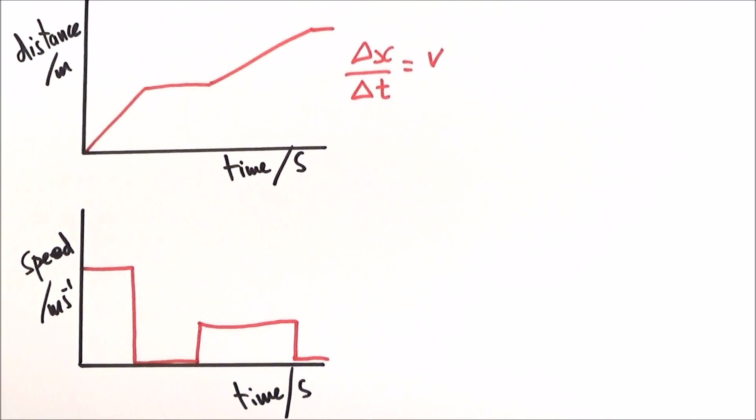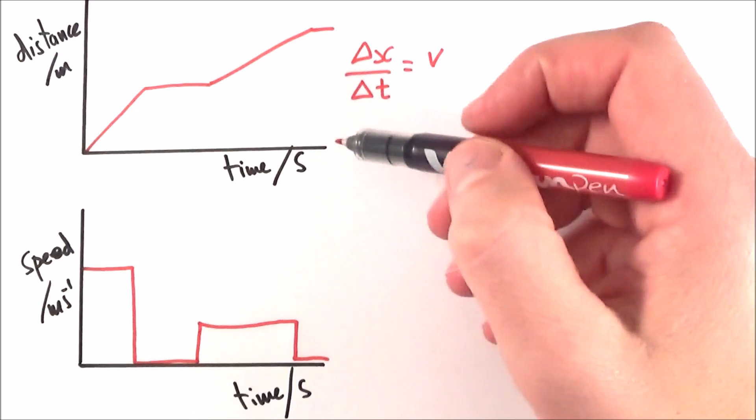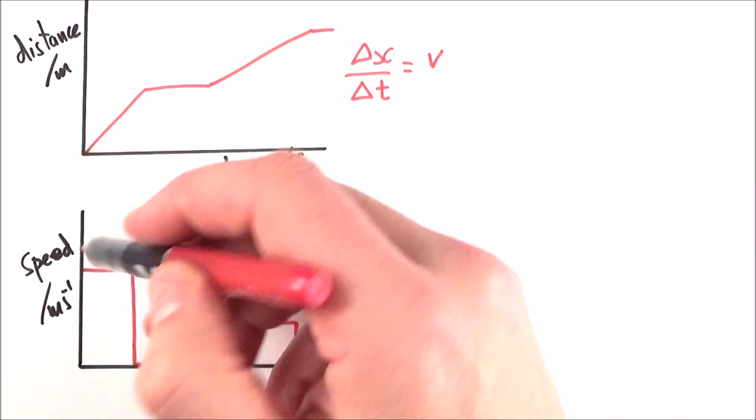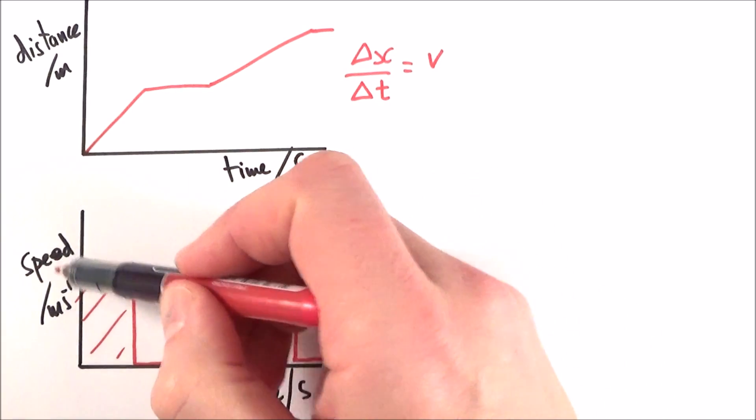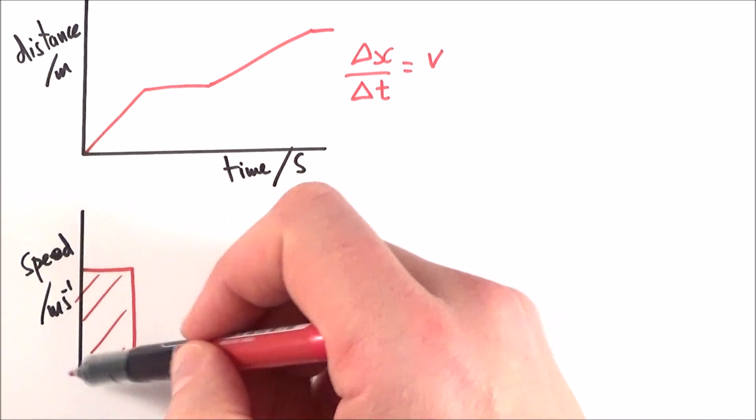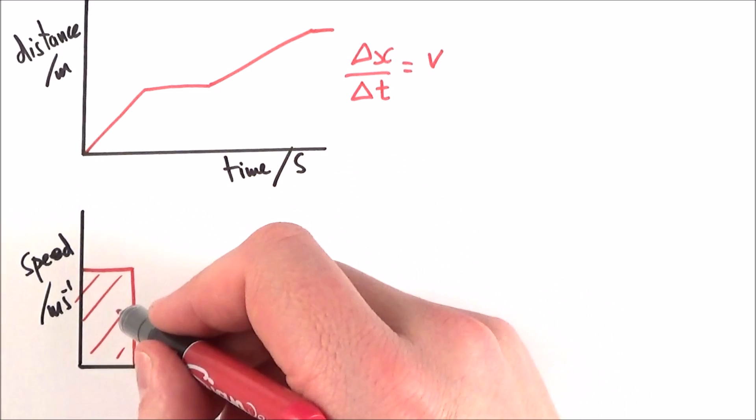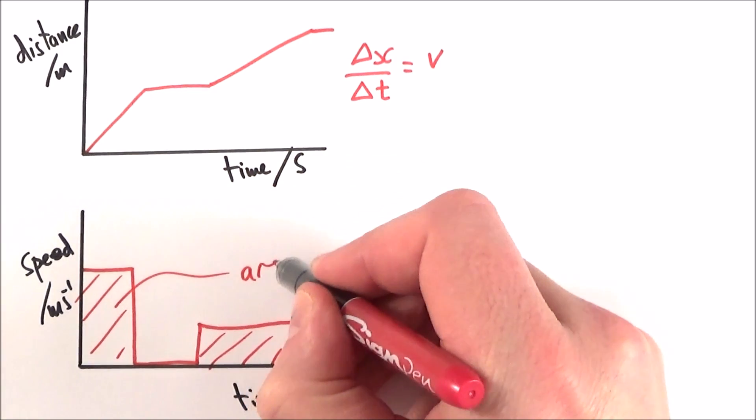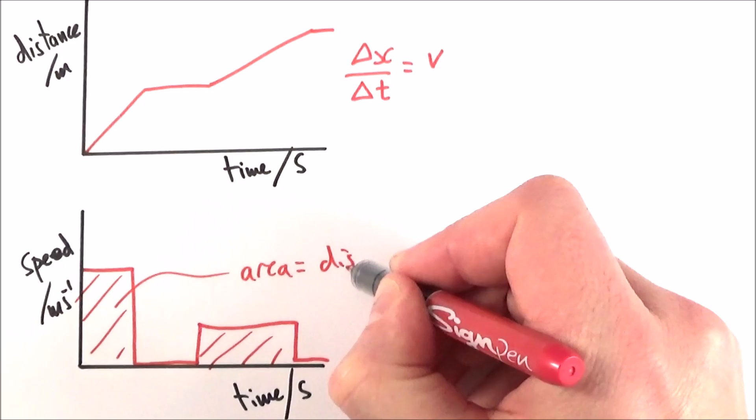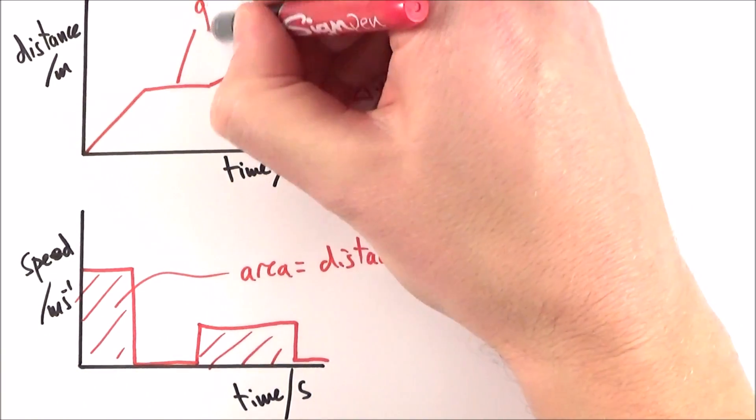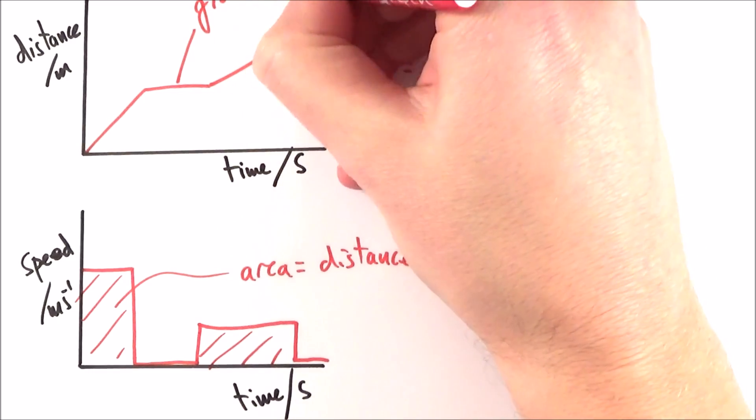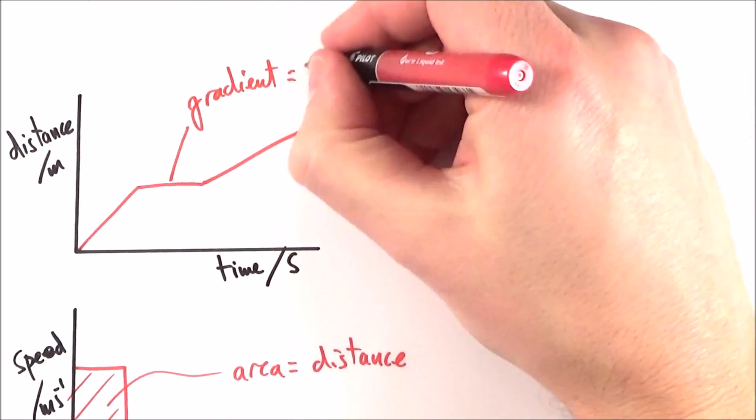Now a final point to note is that we might know the total distance that something has moved. But because the area under the bottom curve can be calculated by looking at the speed multiplied by the time, so the base times the height, it means the area here is equal to the distance traveled, whereas here the gradient was equal to the speed.